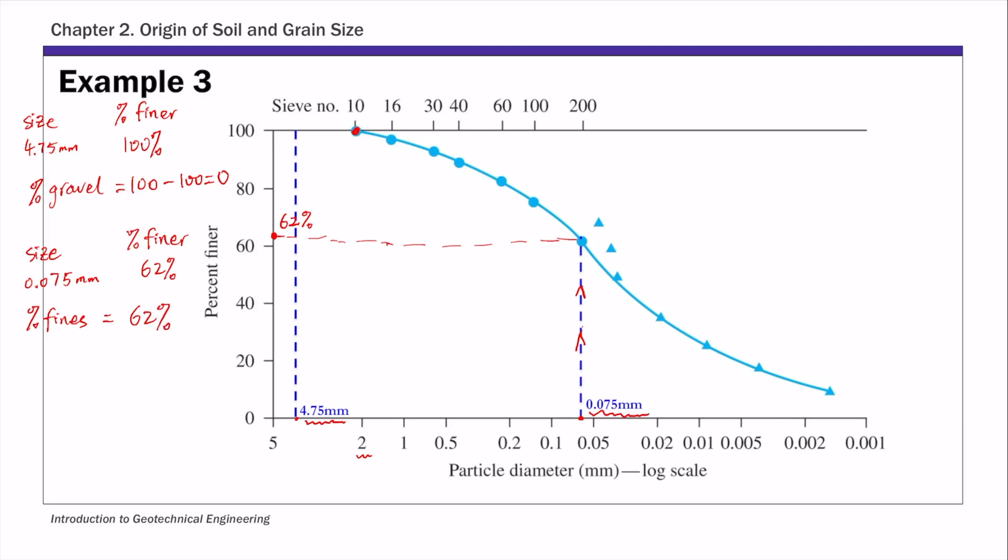Finally, the percent of sand. The percent of sand basically is the percent of particles between 0.075 and 4.75 millimeters. For this example, percent of sand is simply 100% minus the percent of gravel minus the percent of fines. So it's 100% minus gravel, which is 0%, minus fines, which is 62%. So the percent of sand is 38%.